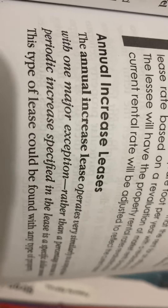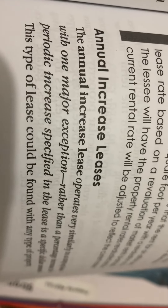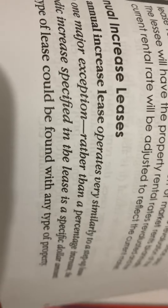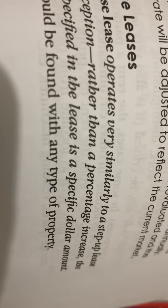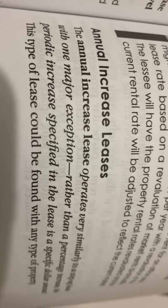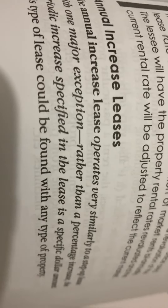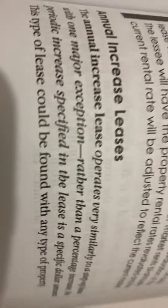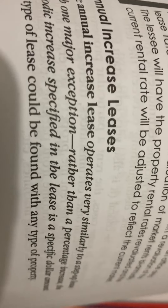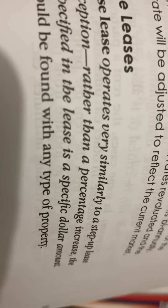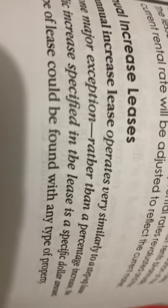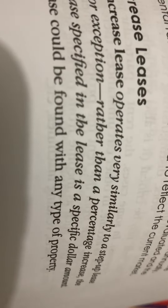Annual Increase Leases. The annual increase lease operates very similarly to a step-up lease with one major exception: rather than a percentage increase, the periodic increase specified in the lease is a specific dollar amount. This type of lease could be found with any type of property.